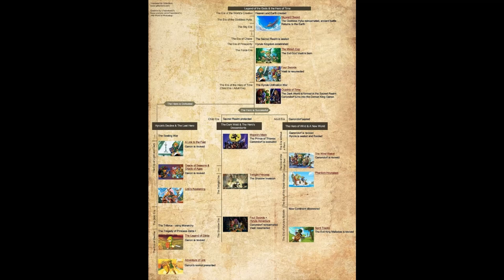Fun fact: Ganon is not actually introduced into the series timeline until the fourth game, Ocarina of Time. Until then it was a villain named Demise in Skyward Sword, and a villain who reoccurred in both Minish Cap and Four Swords named Vaati. Very creepy guy — if you haven't played Minish Cap, please go back and do that.